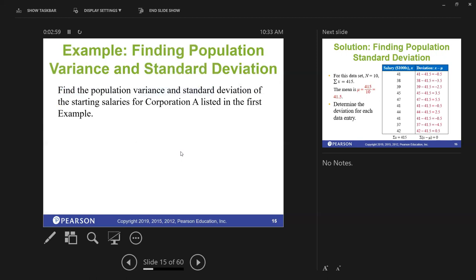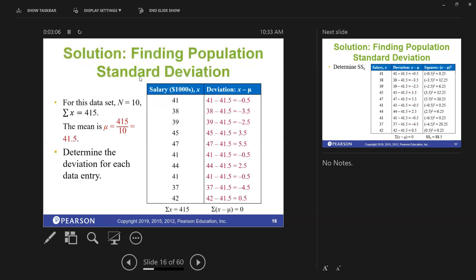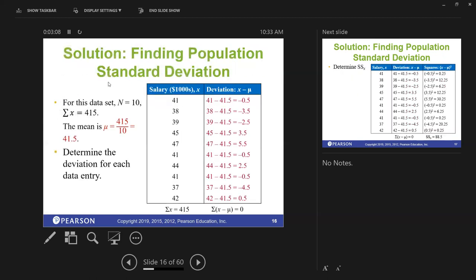So to find the population variance and the standard deviation of the starting salaries for the corporation I listed in the first example—this would be some things you could go through. I'm going to see if you can sort through this using the PowerPoint and follow the steps there.